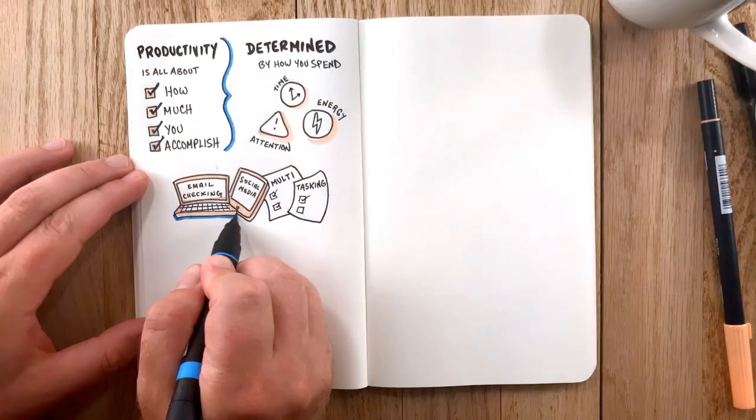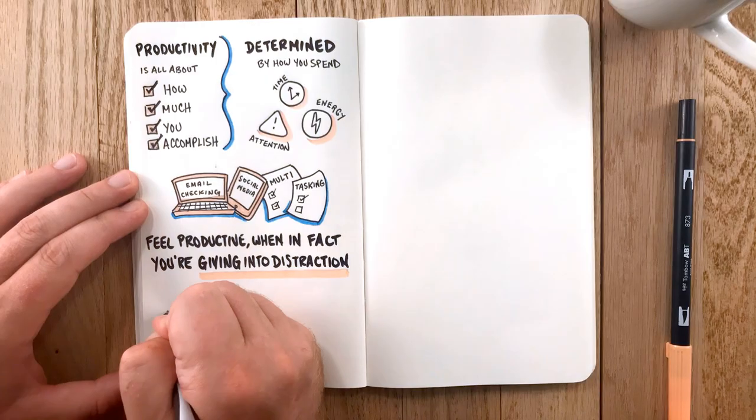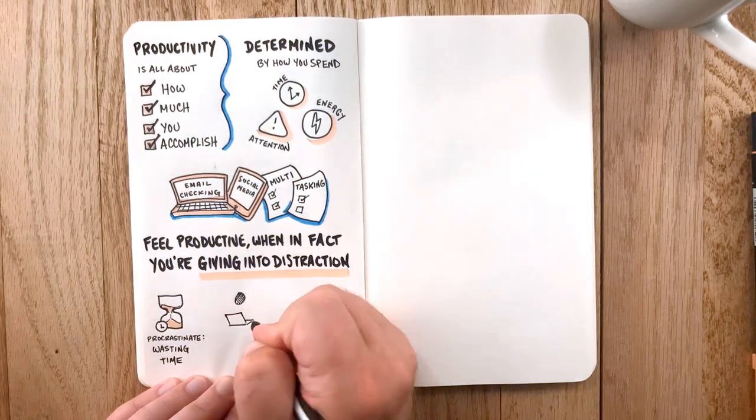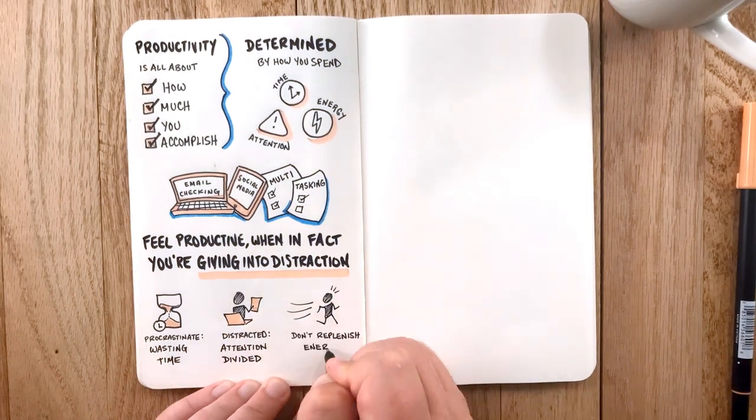When you procrastinate, you're wasting your time. When you're distracted, your attention gets divided too much. And when you don't let your energy levels replenish, you get burned out and feel tired.